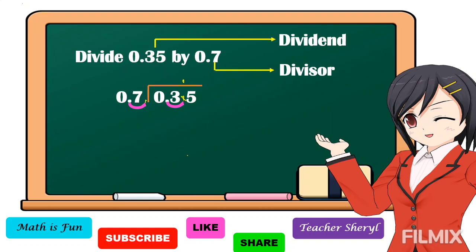Then divide the decimals like you do with whole numbers. 3 divided by 7 — the answer is equal to 0. 0 times 7 is equal to 0. 3 minus 0 is equal to 3. Bring down 5. 35 divided by 7 is equal to 5. 5 times 7 is equal to 35, so we don't have a remainder. Therefore, if we divide 35 hundredths by 7 tenths, the answer is 5 tenths.